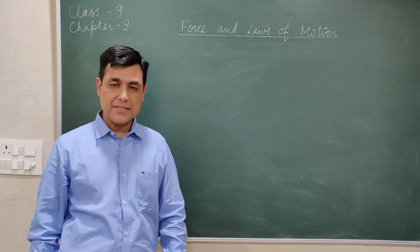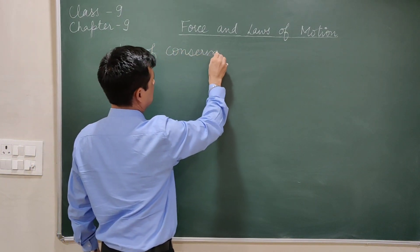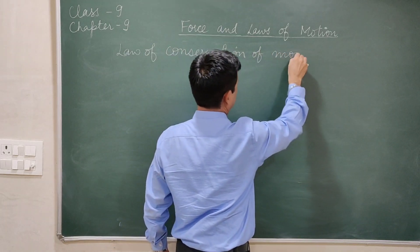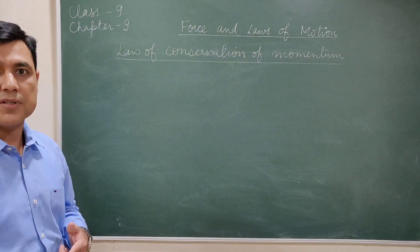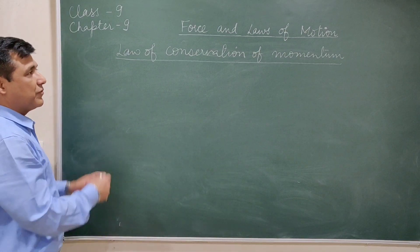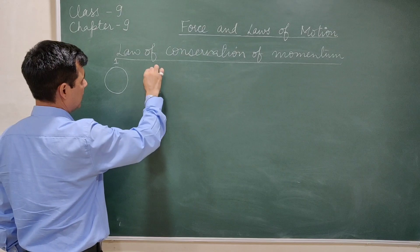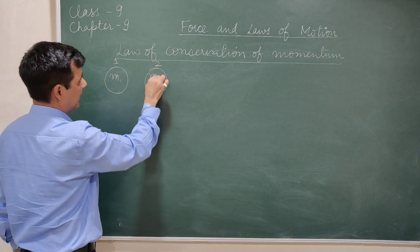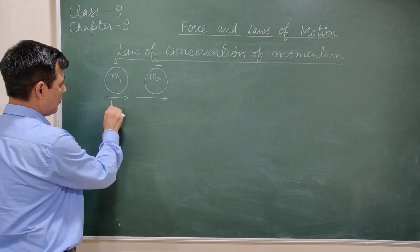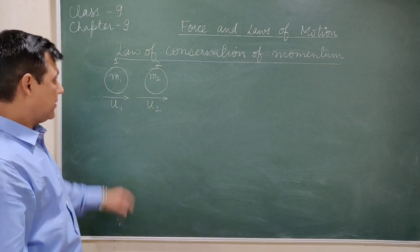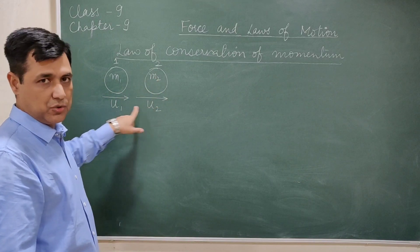Next is the law of conservation of momentum. We have already studied linear momentum. For this, let us assume we have two objects — object 1 and object 2 — with masses M1 and M2, moving on a straight path one after another, such that their initial velocities are U1 and U2 respectively.